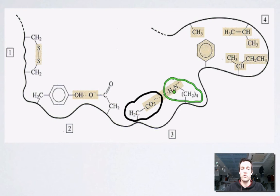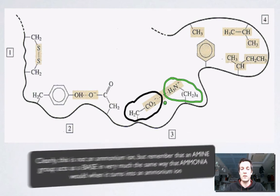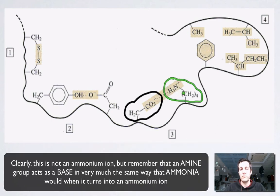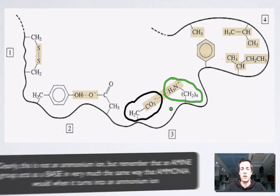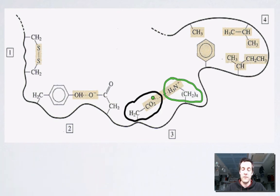We saw that the amino groups could turn into ammonium ions, basically NH3+. The fourth hydrogen has been replaced by this chain.